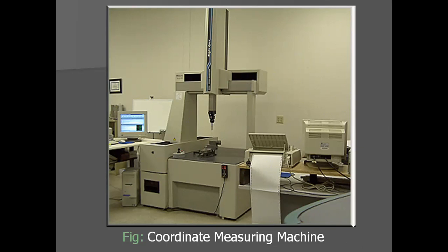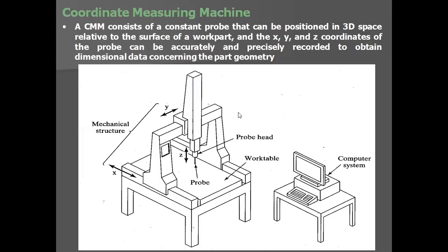A CMM consists of a contact probe that can be positioned in 3D space relative to the work surface of a work part. The X, Y, and Z coordinates of the probe can be accurately and precisely recorded to obtain dimensional data concerning the part geometry. Whenever the probe touches a point, the recording of the X, Y, Z coordinate is made — for example, (2, 4, 8). The computer system handles all calculations to tell us the variation, shown as color bands indicating how much deviation there is.